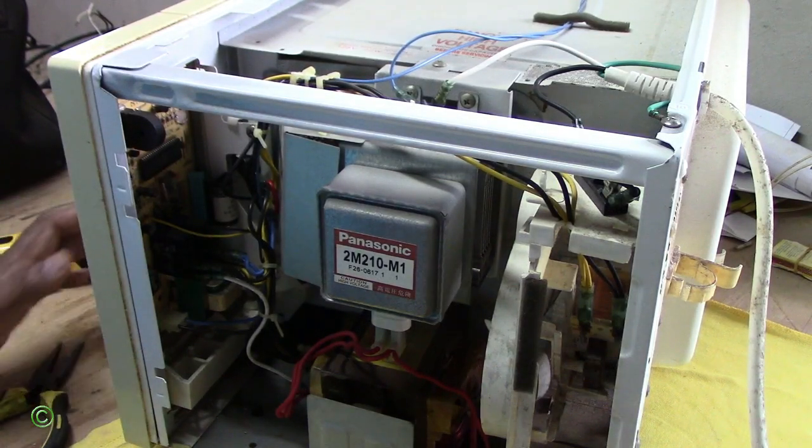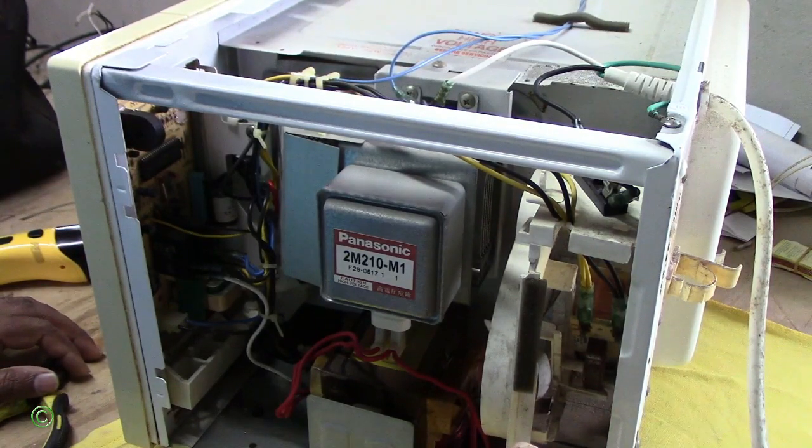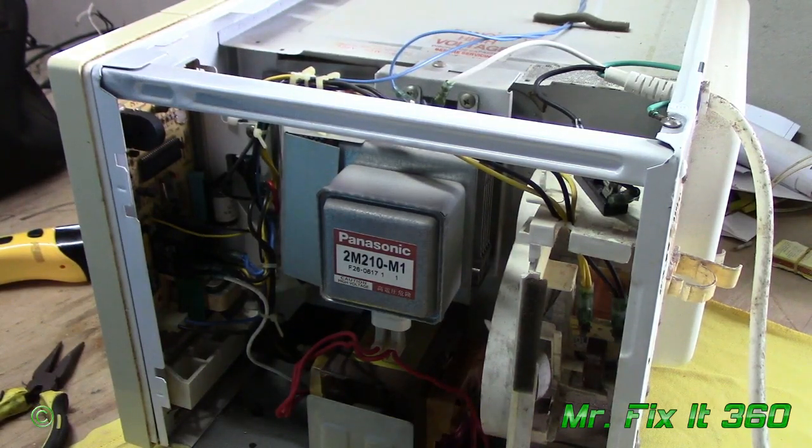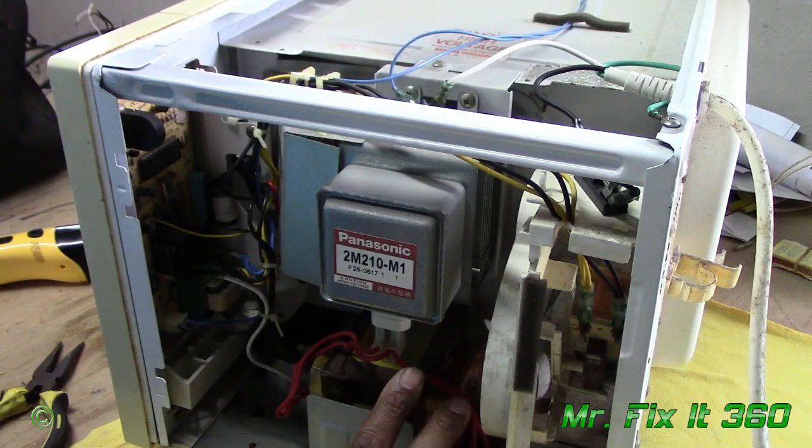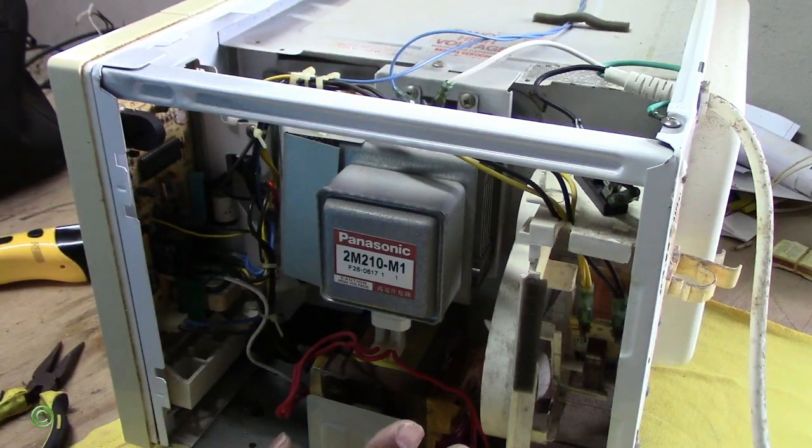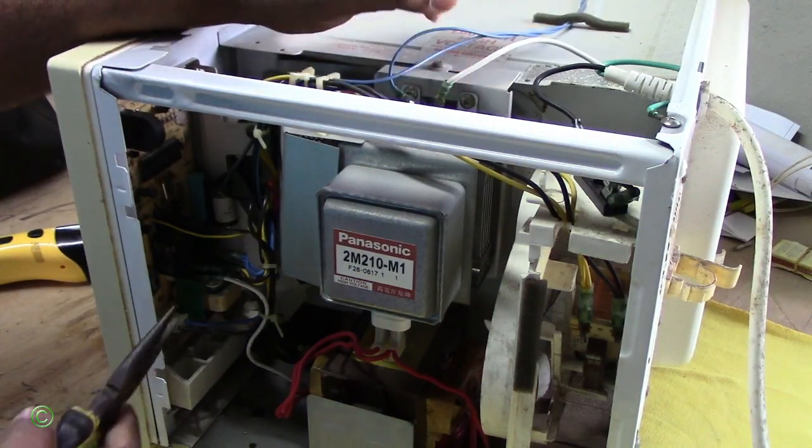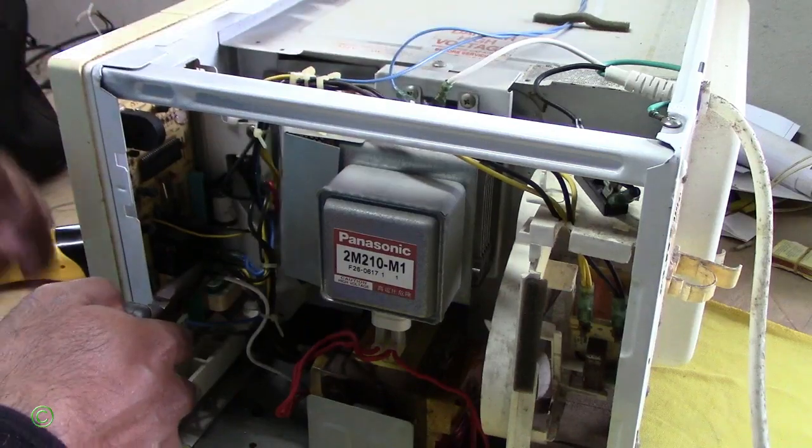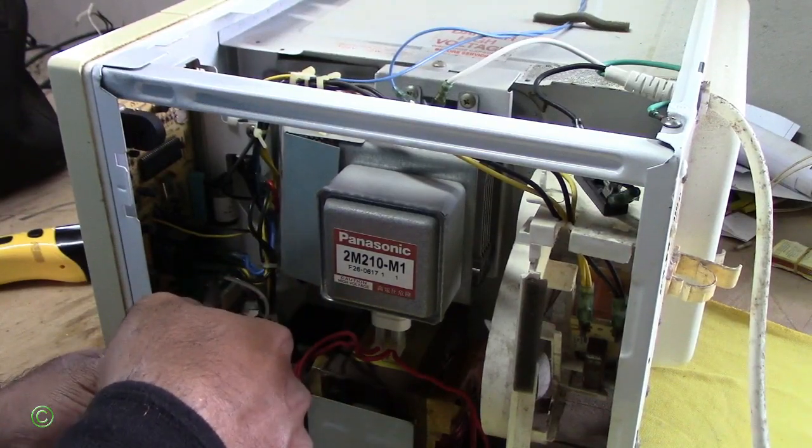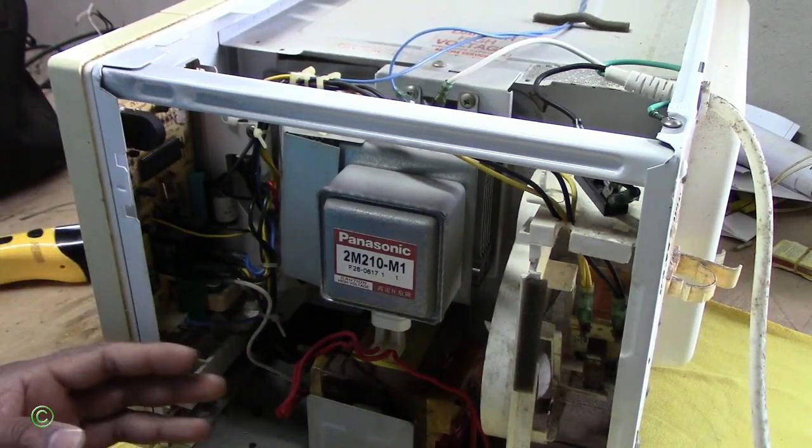Alright, so I have this microwave and the problem is that the fuse keeps blowing. I ran some tests and everything's working right - the capacitor's good, the magnetron's good, the transformer's good, everything's good. But the fuse keeps blowing. So the problem with this is that the wire harness, all the wires in the microwave, have corrosion. Alright, so let me show you.